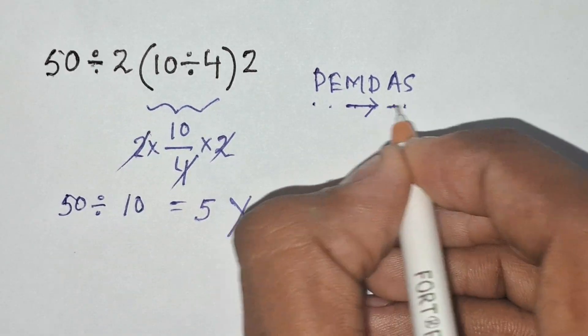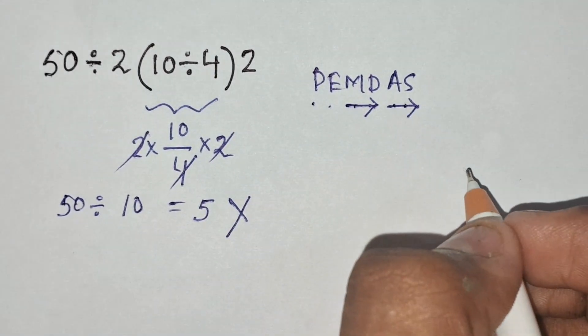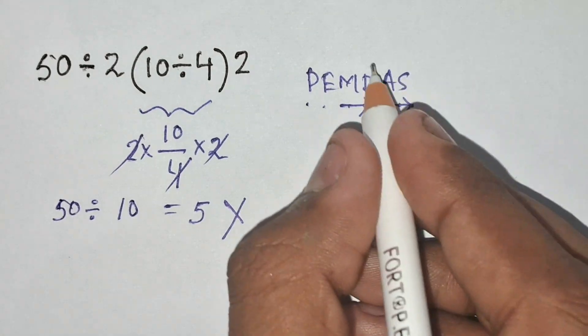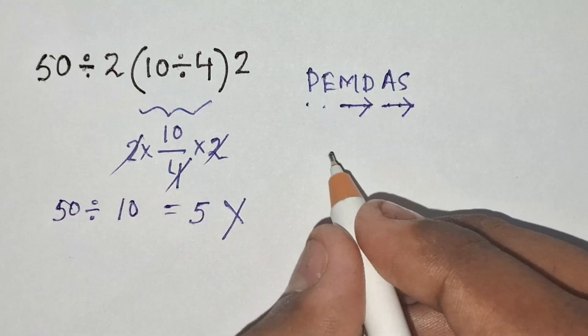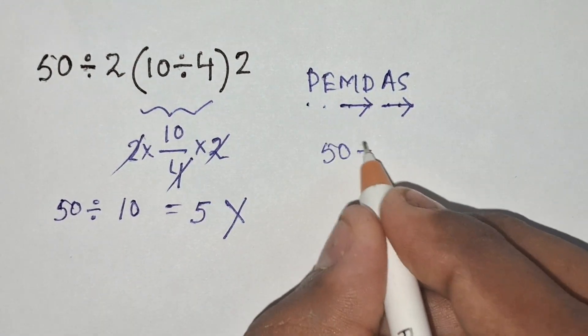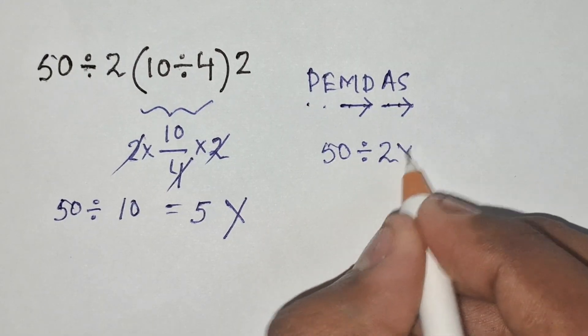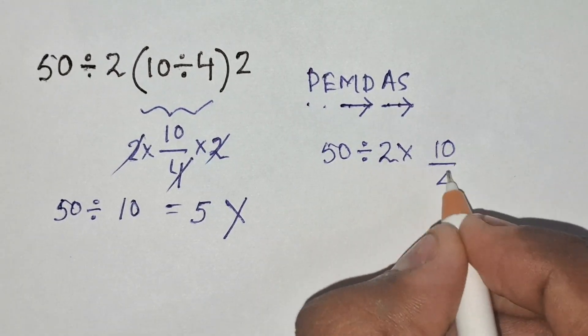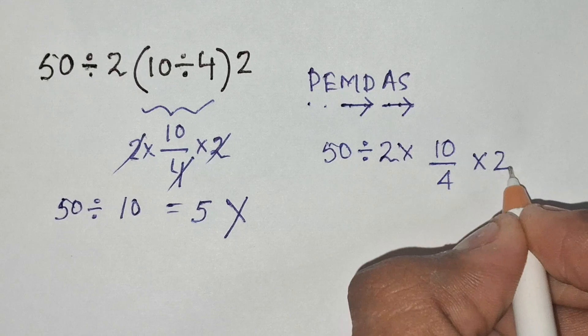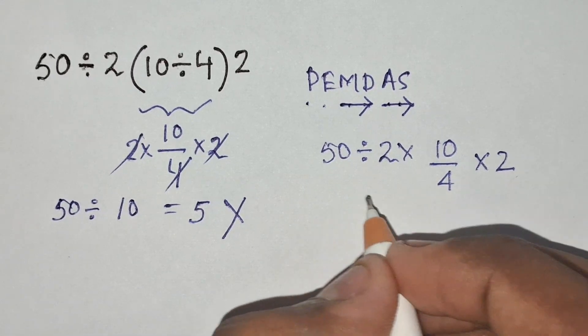Let's apply this rule and try to solve the value of this expression: 50 divided by 2 times 10 divided by 4 times 2. First we have to solve the division before the multiplication.